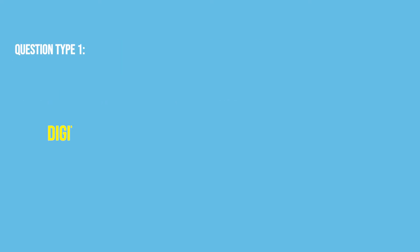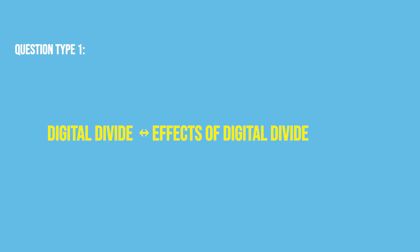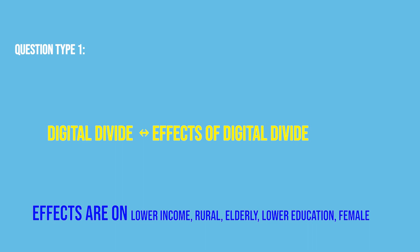The first kind of question is where they give you the digital divide and want you to identify its effects — always on lower income, rural, elderly, lower education, or maybe female people. A flip of this is they might give you an effect of the digital divide and want you to identify that it's caused by the digital divide, as opposed to something like undecidable problems or heuristics.